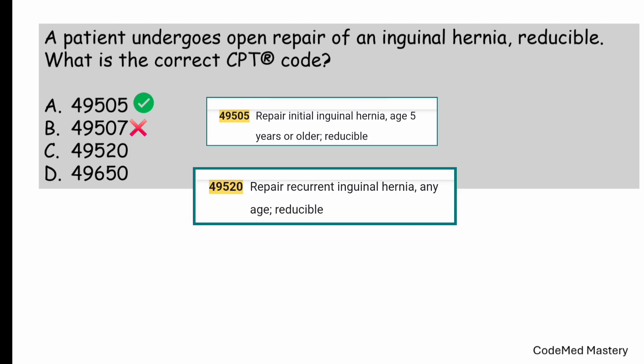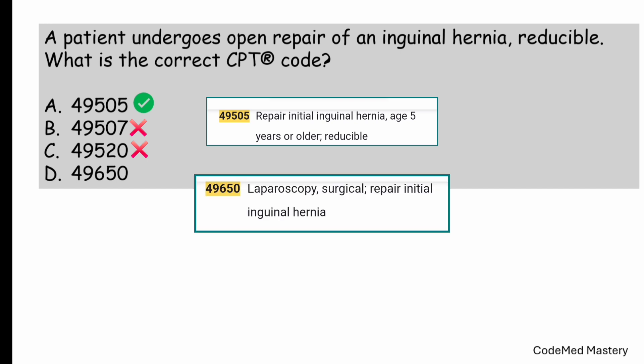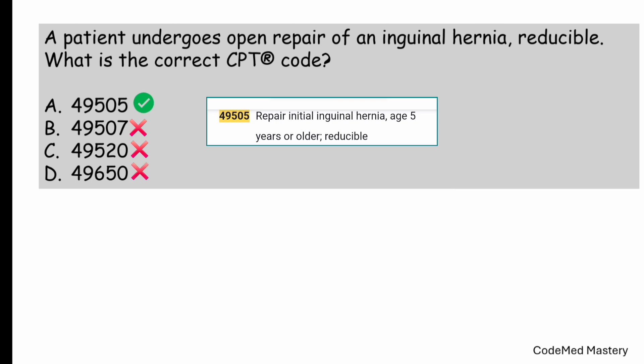The code 49520 is for repair recurrent inguinal hernia, any age, reducible — that does not match the question. The code 49650 is for laparoscopy surgical repair, initial inguinal hernia, but the question has not given laparoscopy surgical, therefore we can eliminate option D also. The right answer is option A, 49505. Remember, we can only use code 49520 if the hernia has reoccurred at the same site after a previous surgical repair, where the surgeon may need to address additional challenges such as scar tissue from the earlier surgery.